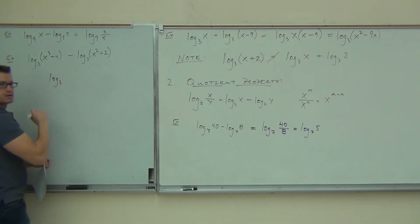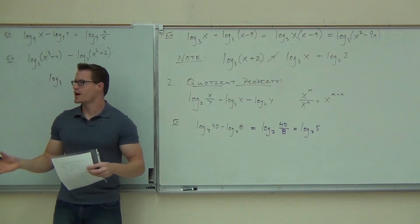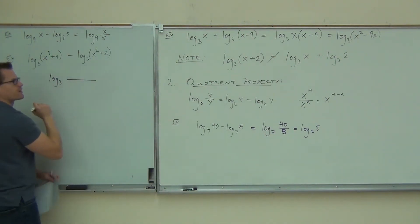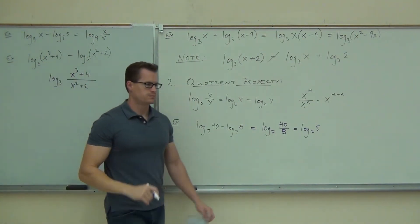Log 3. Okay, great. That's the only log I should write, right? Because I have those two logarithms. I'm combining them to one. What's going to go on the numerator of my fraction? Perfect. And the denominator?